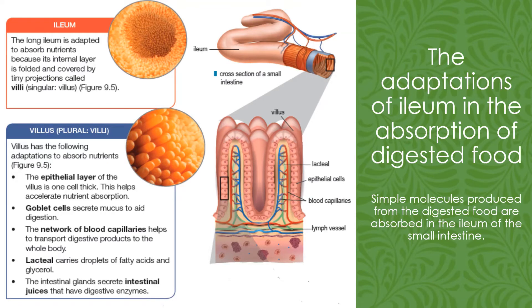In the previous subtopic, we have seen how complex molecules in food are hydrolyzed into simpler molecules. In this subtopic, we are going to see how these simple molecules produced from food digestion are absorbed in the small intestine — specifically the last part of the small intestine, which is known as the ileum. Now we are going to see the adaptation of the ileum to ensure absorption of digested food happens efficiently.